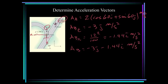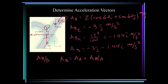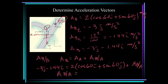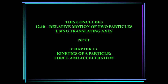Now it's a simple matter of substitution. The acceleration of B with respect to A: using a_B = a_A + a_{B/A}, we get: minus 1.44i minus 3j equals 2cos(60)i plus 2sin(60)j plus a_{B/A}. Solving, the acceleration of B with respect to A is minus 2.44i minus 4.73j meters per second squared. This concludes this chapter. Next is Chapter 13: Kinetics of a Particle — Force and Acceleration.